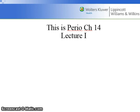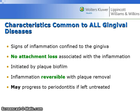Hello, students. This is Perio, Chapter 14, Lecture 1. Characteristics common to all gingival diseases: signs of inflammation confined to the gingiva, no attachment loss associated with the inflammation, and initiated by plaque biofilm.